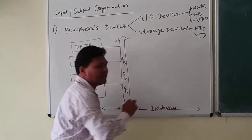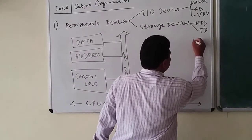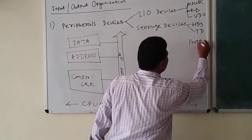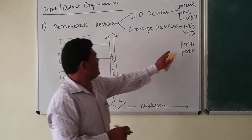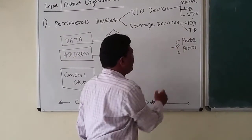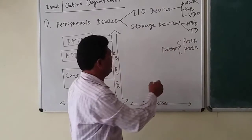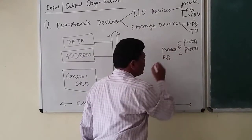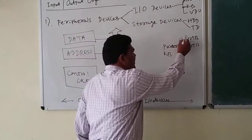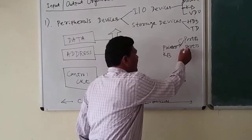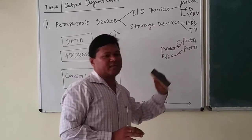Many I/O devices are connected through ports. For example, consider two ports: port A and port B. Two devices are connected — a printer as an output device is connected in port A, and a keyboard as an input device is connected in port B.